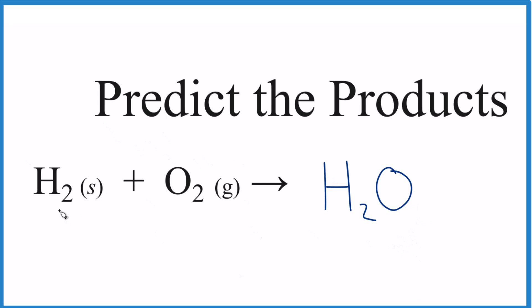That's how I would predict this reaction. Note it's not balanced. We have one oxygen here, so let's put a two. We have two here, two here. Two times two is four, so we'll put a two here. Now it's balanced.